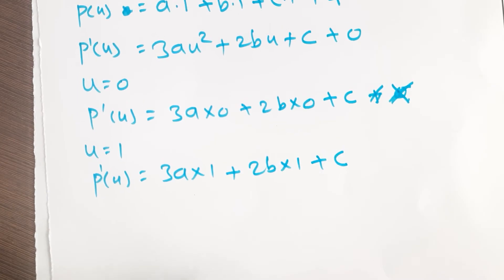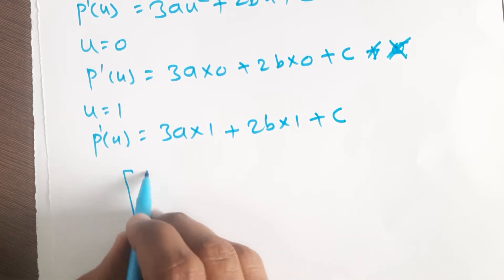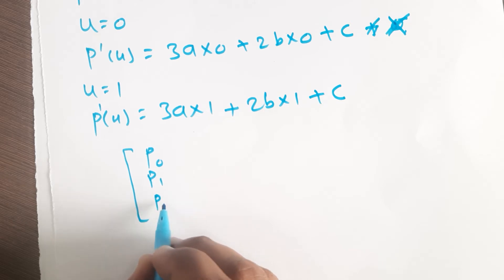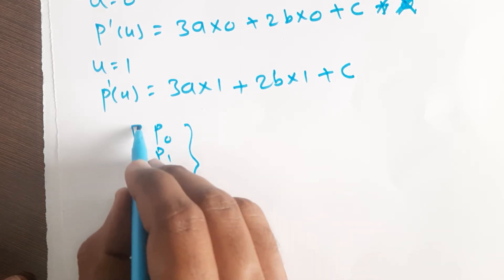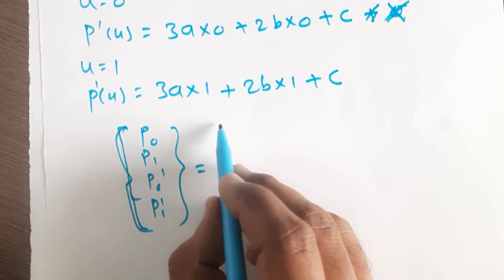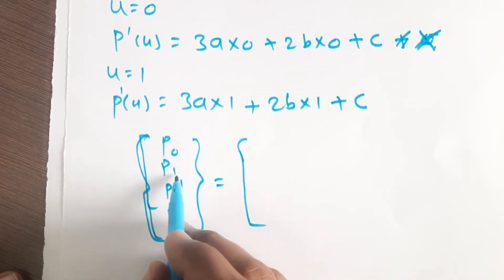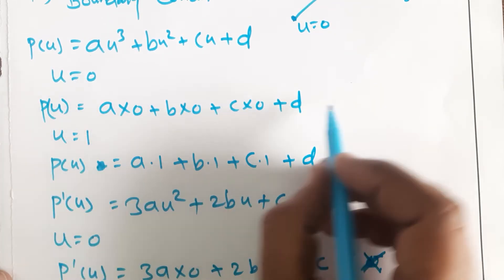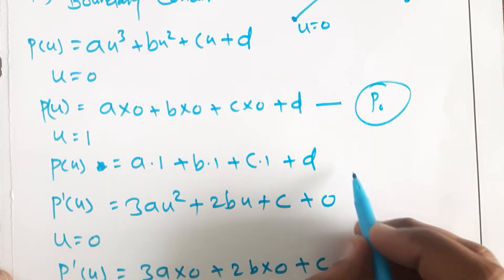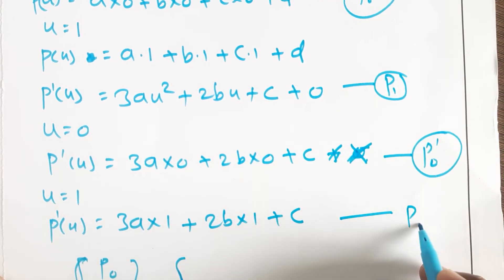Now if we want to write all these equations in matrix form, we can write a column matrix: p(0), p(1), p'(0), p'(1). So p(0) means when u = 0; p(1) is when u = 1; p'(0) is the tangent vector at u = 0; p'(1) is the tangent vector at u = 1. This column matrix equals a coefficient matrix multiplied by [a, b, c, d]ᵀ.